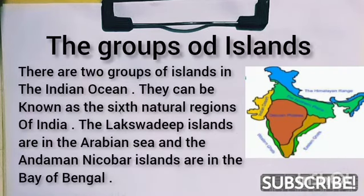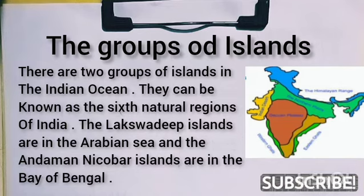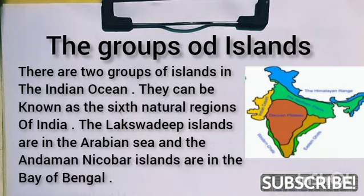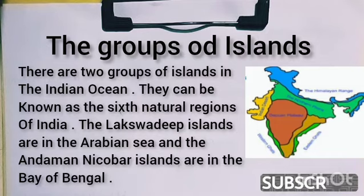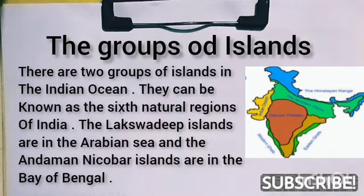The last physical feature of India is the group of islands. There are two groups of islands in the Indian Ocean, which can be known as the sixth natural region or physical feature of India. One is the Lakshadweep Islands in the Arabian Sea, and the other is the Andaman and Nicobar Islands in the Bay of Bengal.